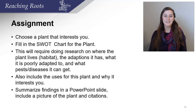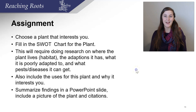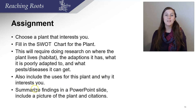Your assignment for this section of the class is to choose a plant that interests you. You're going to fill out a SWOT chart covering the strengths and adaptations that plant has, the weaknesses, the opportunities or available resources it takes advantage of, and the pests and bad conditions that plant faces. This will require you to do research on where the plant lives, what the habitat is, the adaptations it has, what it is poorly adapted to, and what pests and diseases it can get. You'll also want to include the use of the plant and why you chose it.